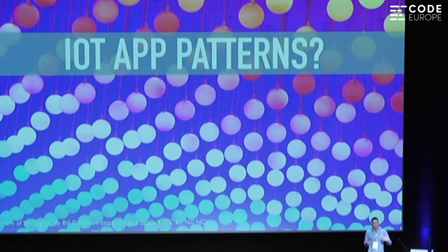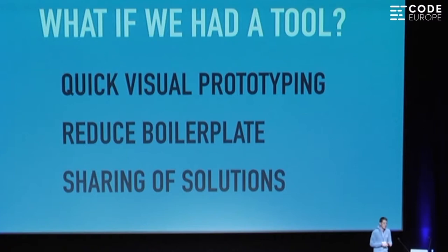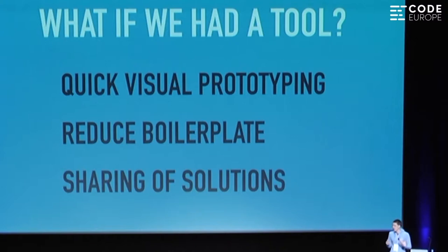Maybe you want to put your fridge on Twitter, have a Slack bot control devices in your home, or call REST-based APIs. If you've done this a couple of times, you start to wonder: is there a way to speed up development in the IoT space with JavaScript? What if you had a tool that allowed really quick visual prototyping, so you didn't have to know the intricacies of every device? Is there a way to reduce boilerplate? And if you've built something cool, how can you share it online so other people can get hold of it?